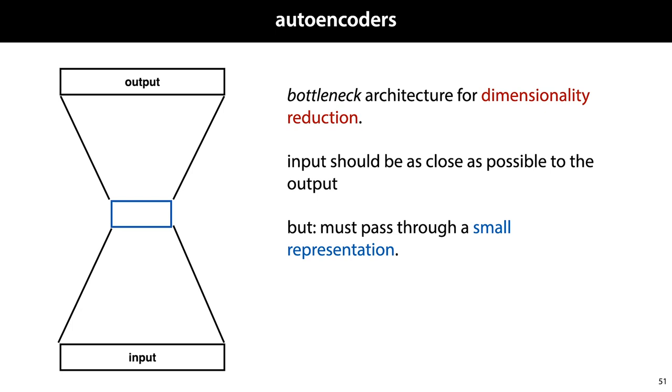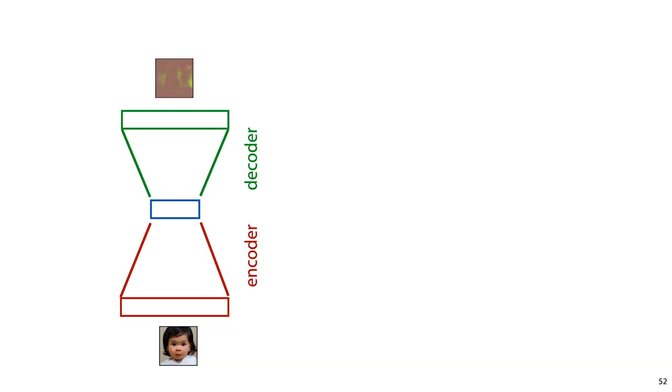After the network is trained, this small layer becomes the compressed, low-dimensional representation of the input. Here's the picture in detail. We call the bottom half of the network the encoder and the top half the decoder.